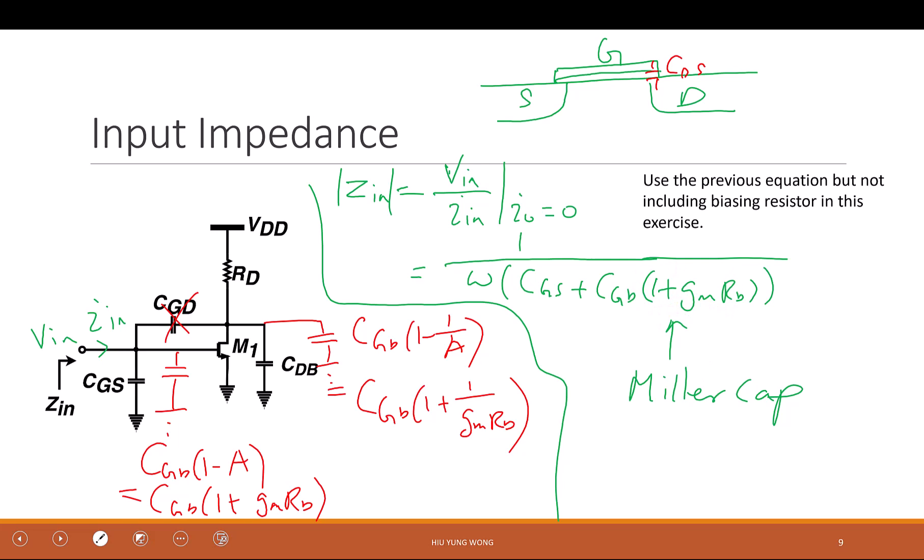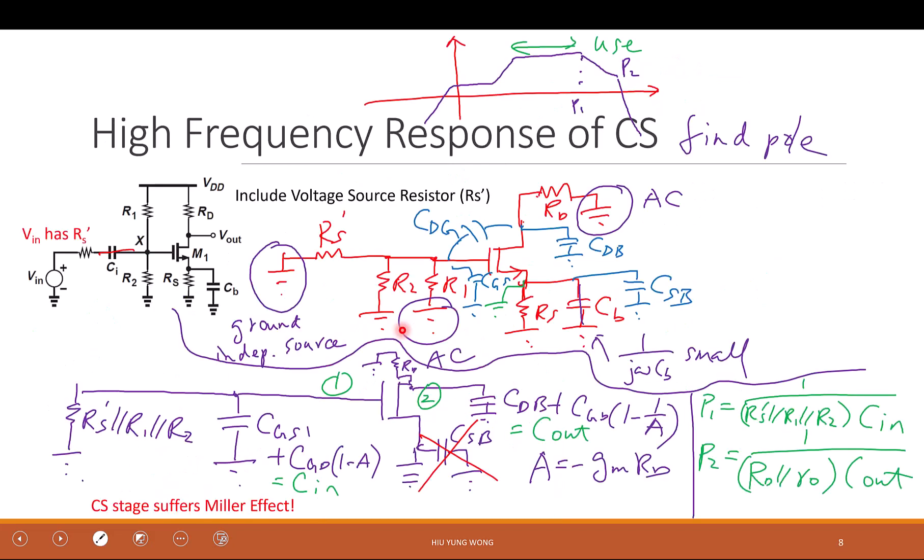The capacitor you see is not just Cgs. It's Cgd multiplied by one plus ten, maybe ten times larger. And what happens if you have a larger capacitor? It means your circuit will be slower. So that means what people will say is that the common source actually suffers the Miller effect.